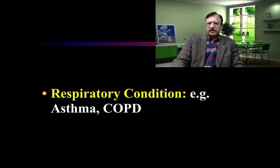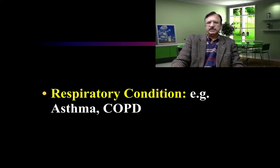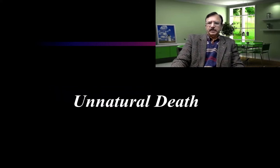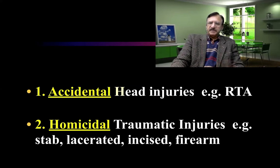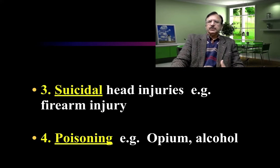Similarly, in the respiratory system, asthma, cardiopulmonary disease — which can be chronic obstructive disease or any other disease of the lungs — or any other condition within the respiratory system can be the cause of death. Coming to the unnatural causes, they can be accidents such as road traffic accidents, or homicidal like any traumatic injury — stab, laceration, incised wound, or firearm. Then suicidal, usually involving firearms or other suicidal attempts. Then poisoning, for example organophosphate compounds — any poison can be a cause of death.